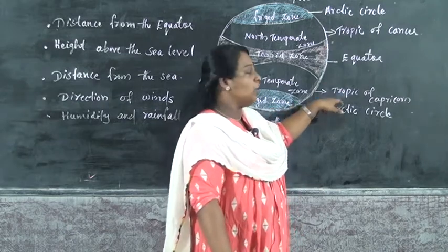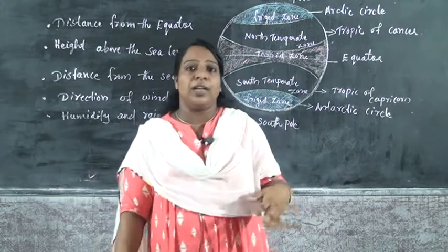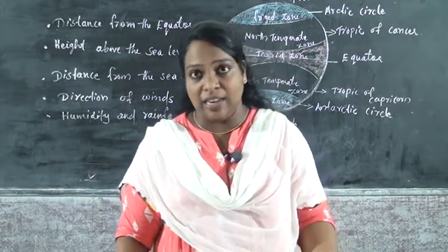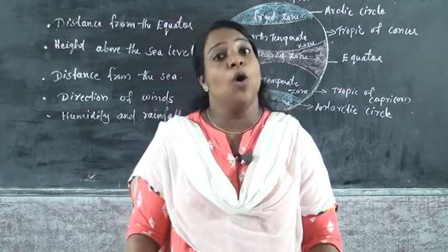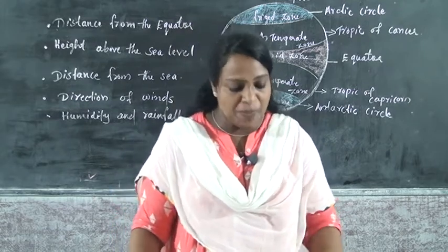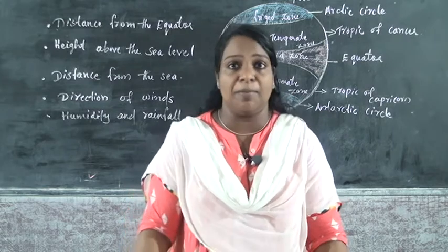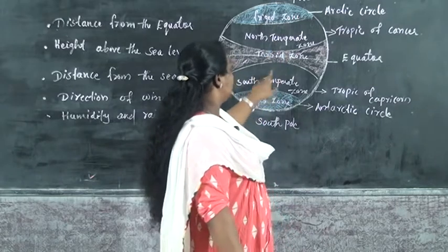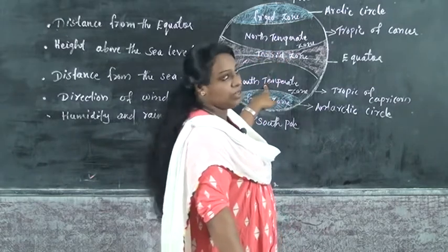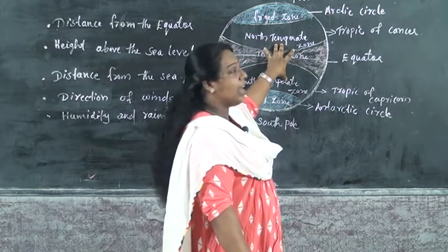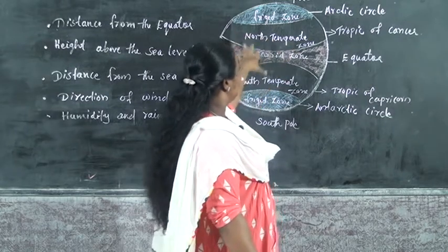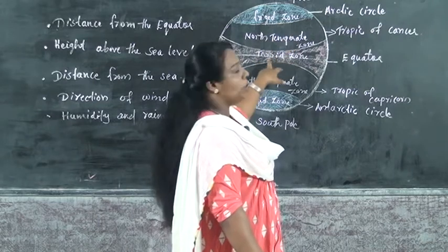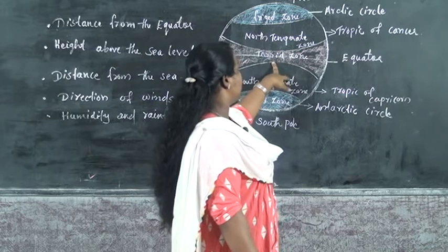Near the equator, all places receive more sunlight, so those areas become very hot. The second zone is the temperate zone — north temperate zone and south temperate zone. This temperate zone is lying in between the frigid zone and the torrid zone.